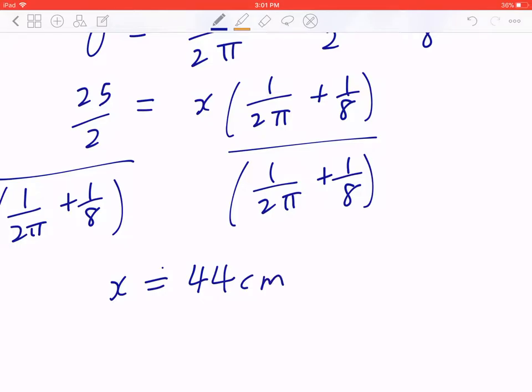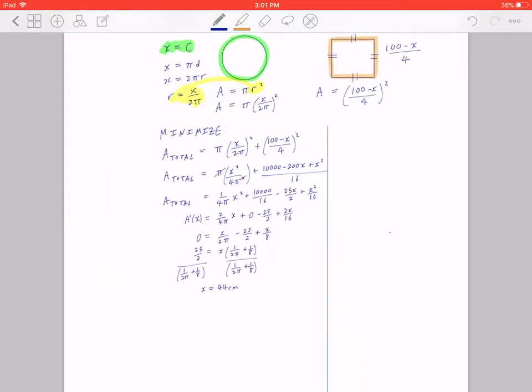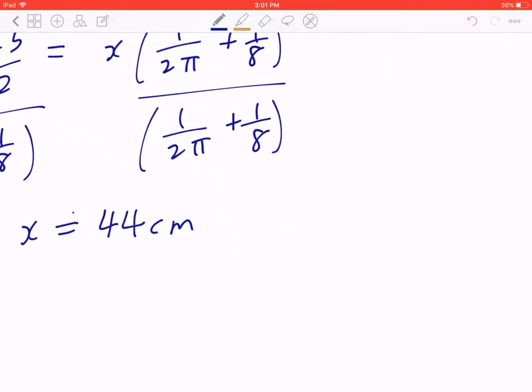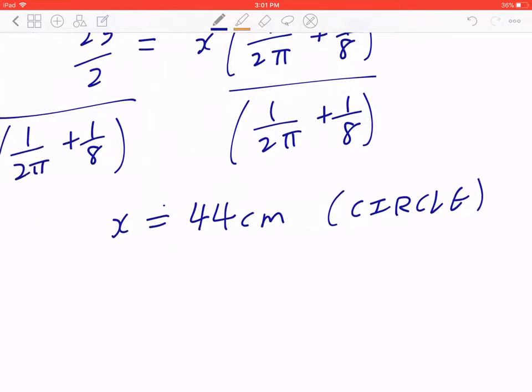Now be mindful, x in the diagram represents the circle. So I'm going to write down circle next to this. And of course, 100 minus x is approximately 56 centimeters, which is a square in this case.